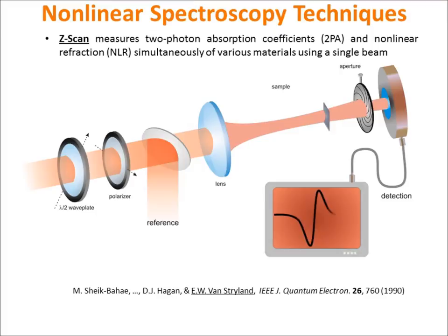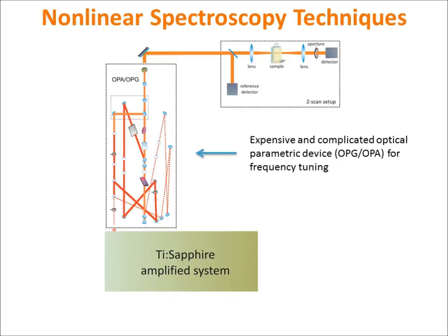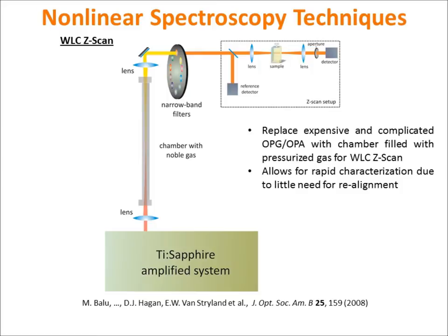To make data acquisitions faster and more efficient, we previously have replaced optical parametric devices with a white-light continuum generated in krypton gas, which can be used as an alternative to OPGs in the visible regime.